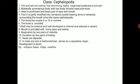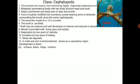Excretion takes place by two pairs of kidneys. Sexes are separate; in males, one arm is hectocotylized and serves as a copulatory organ. Development is direct, meaning there is an absence of larval stages.